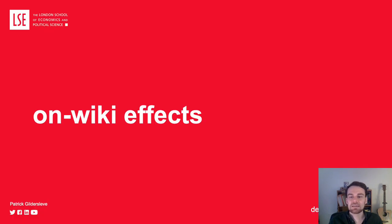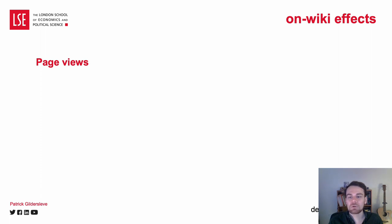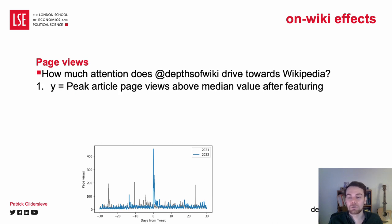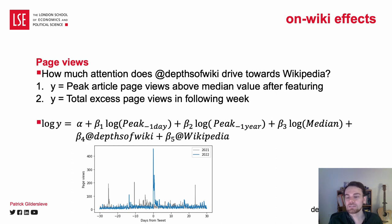Next, I want to consider the effects of these popular social media posts on Wikipedia itself, in terms of additional pageview traffic, edits, and editors. For pageviews, we want to find out how much attention is driven towards Wikipedia. I consider the peak pageviews after an article is featured on Twitter, and also the total views in the following week. I use negative binomial regressions, and consider the pageviews in the previous day, the pageviews in the same day the previous year, and the average pageviews towards the article, as well as whether it is featured by Depths of Wikipedia, the Wikipedia account, or another account.